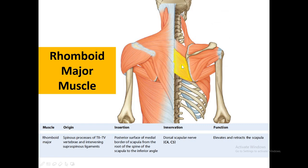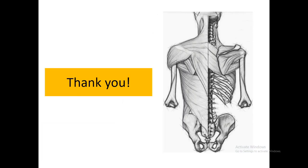The rhomboid major is also innervated by the dorsal scapular nerve and functions to elevate and retract the scapula, acting on the inferior angle of the scapula.